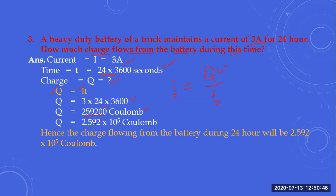When the current was maintained at 3 amperes for 24 hours, we were asked to calculate the number of charges. The answer is 2.592 × 10⁵ coulombs. This type of problem: whenever you are given an amount of current and the time for which it flows, you can calculate how much charge has passed through the conductor with the help of Q = I × T.